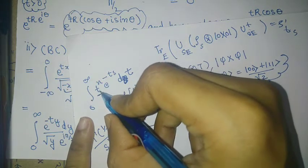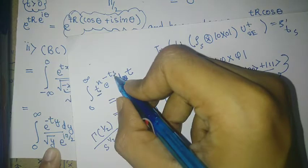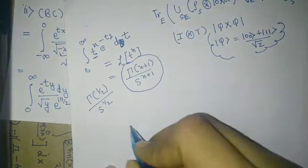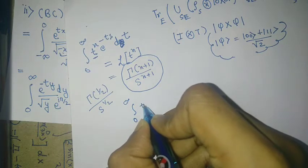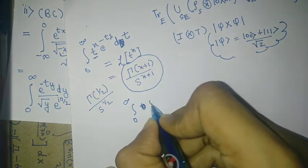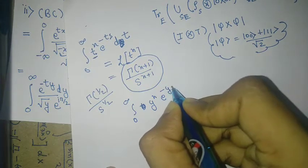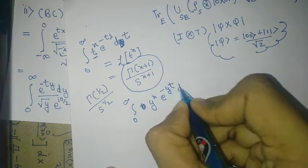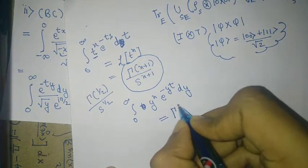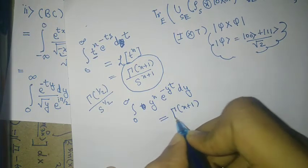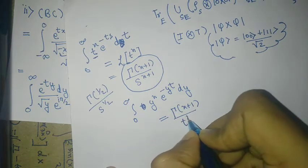So I can substitute t as y and I can substitute s as t. Then I can get just 0 to infinity y power n e power minus y t dy is just Γ(n+1) and s is t. So I get t power. So let's put it straight. So let's put it in.